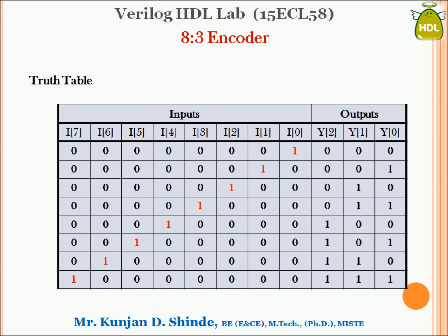Y2 is the MSB and Y0 is the LSB. If I0 is high and the rest of the bits are 0, the output will be 0, 0, 0, meaning the 0th bit is high. Moving on, if I1 is high, the output combination changes to 0, 0, 1, indicating the first bit is high. Similarly, if I7 is high and I6 to I0 are 0, the output combination will be 1, 1, 1.